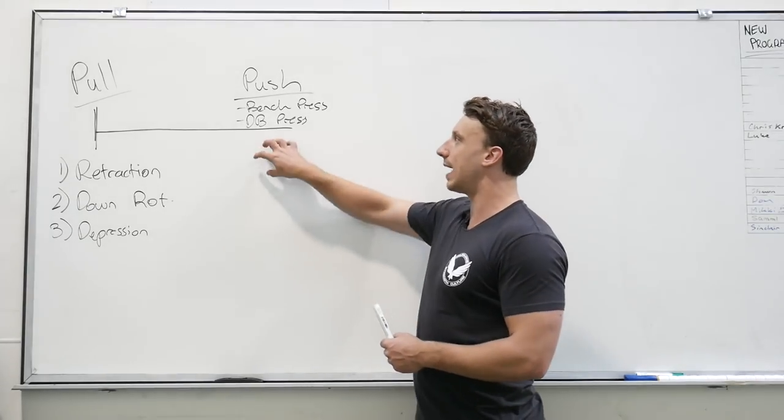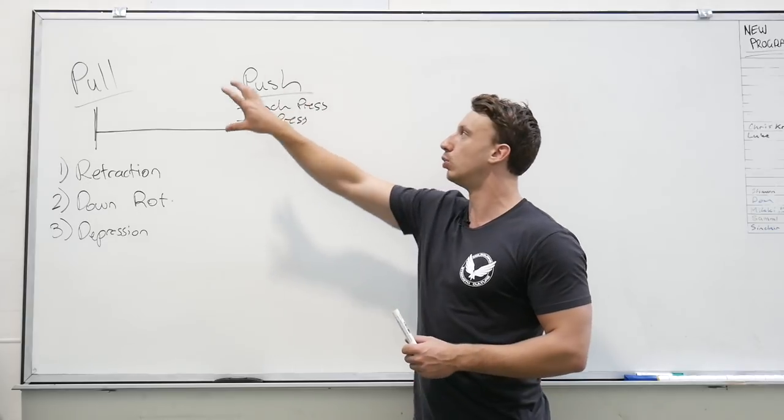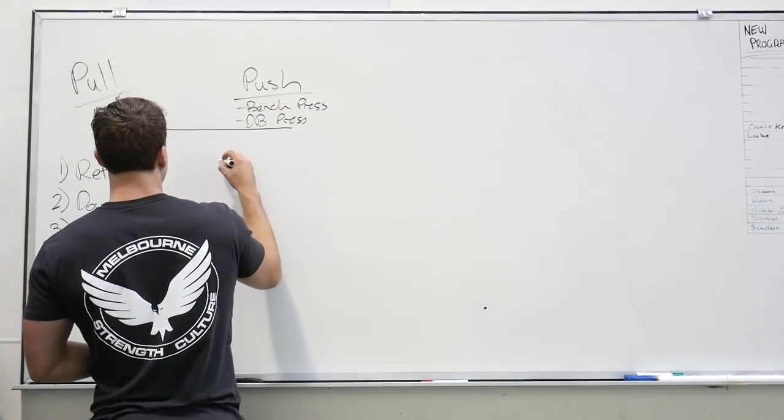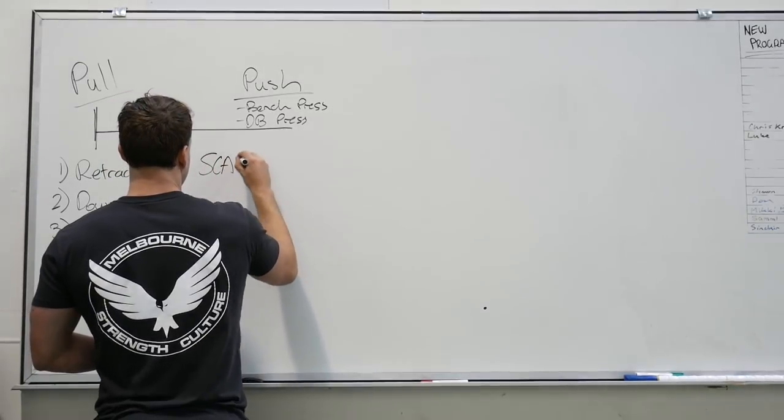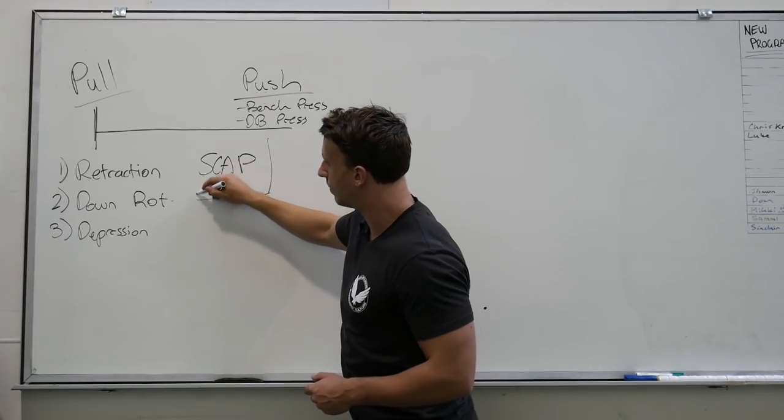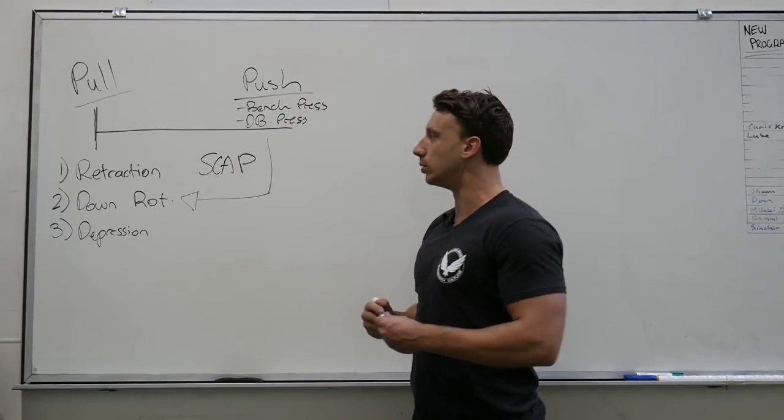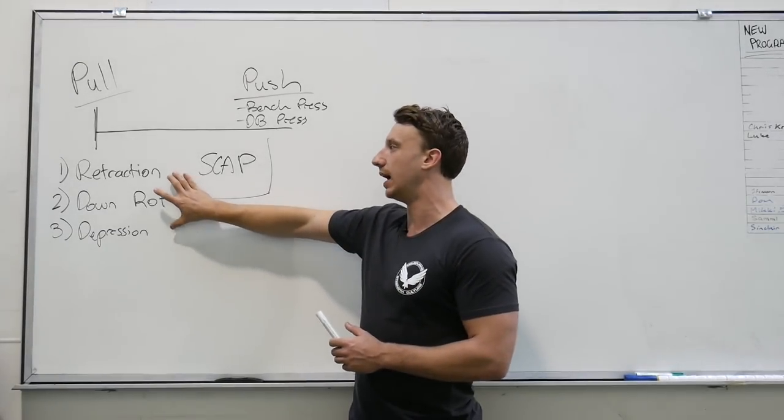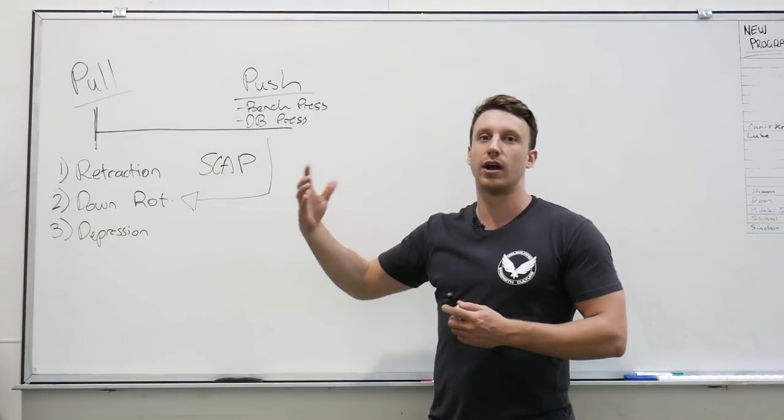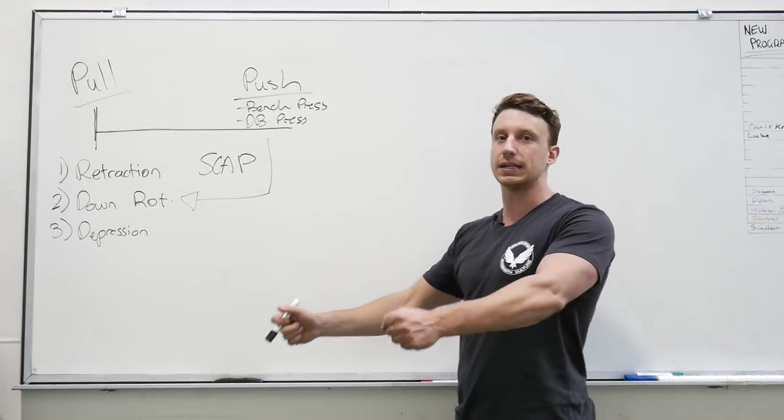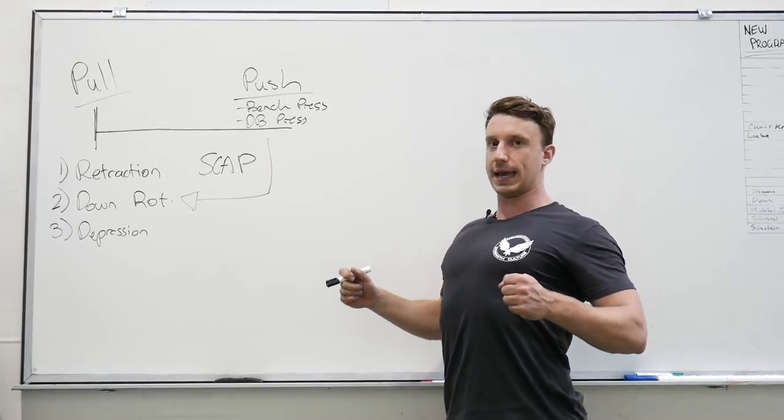Unfortunately what that actually means when we're looking at our pull to push ratio is that at the shoulder blade, at the scap, this push now actually becomes half a pull in that our shoulder blade position is very similar and quite often the exact same as our pulling movement in being it's retracted, depressed and downwardly rotated.